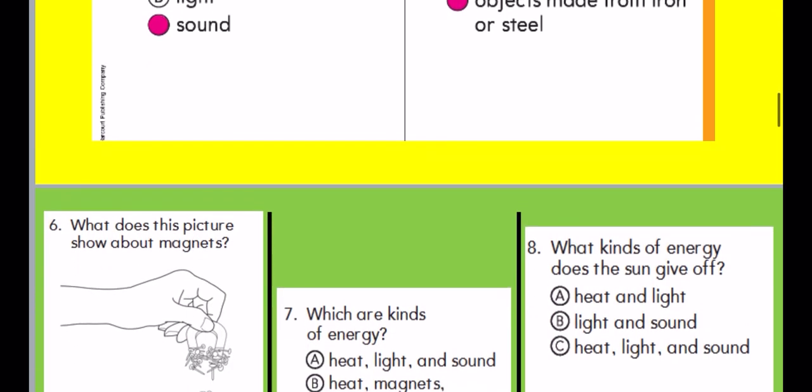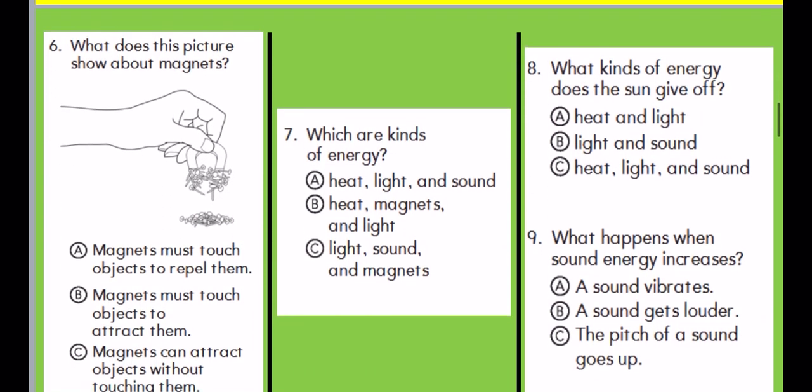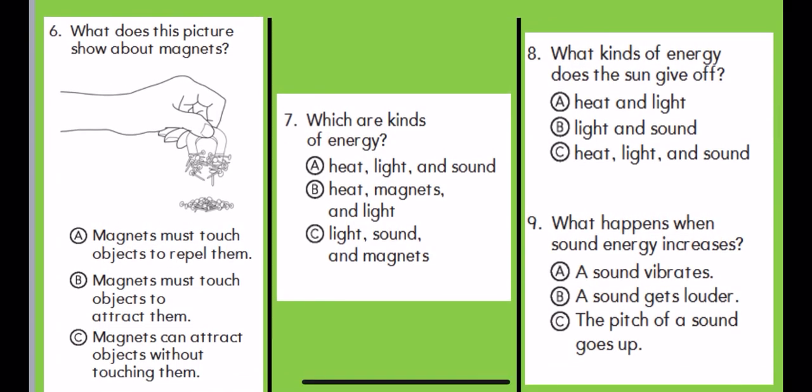What do we have more? All right. Over here, number six. What can you see in this picture? I can see a magnet and a boy, he's trying to pull some screws, maybe. What does this picture show about magnets? Magnets must touch objects to repel them? Or magnets must touch objects to attract them? Or magnets can attract objects without touching them? What do you think? Think, think, think.